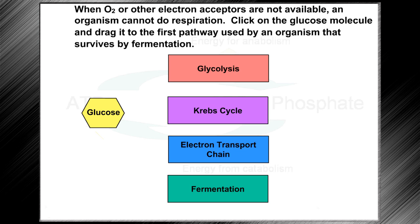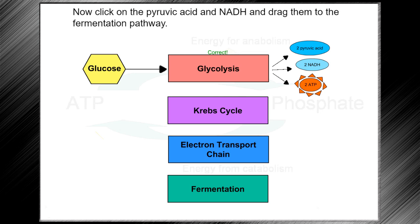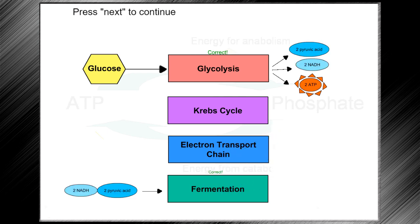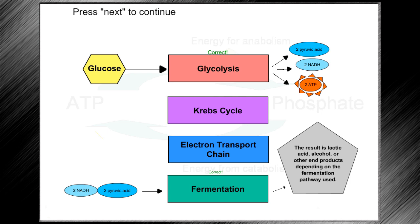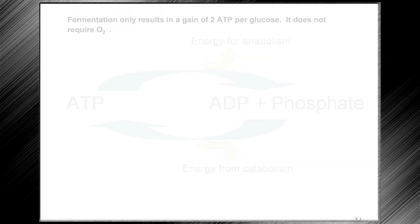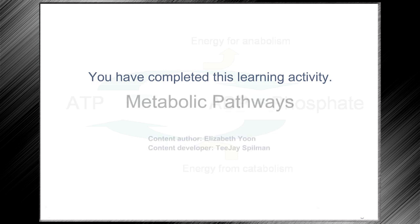When oxygen or other electron acceptors are not available, an organism cannot do respiration. Let's click on the glucose molecule and drag it to the first pathway used by an organism that survives by fermentation. We'll then click on the pyruvic acid and NADH and drag them to the fermentation pathway. The result is lactic acid, alcohol, or other end products depending on the fermentation pathway used. Fermentation only results in a gain of 2 ATP per glucose and does not require oxygen. You have completed this learning activity on metabolic pathways.